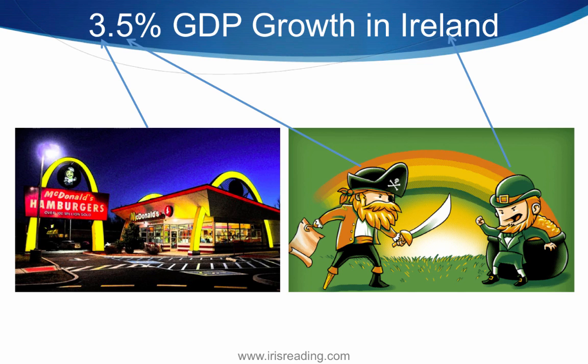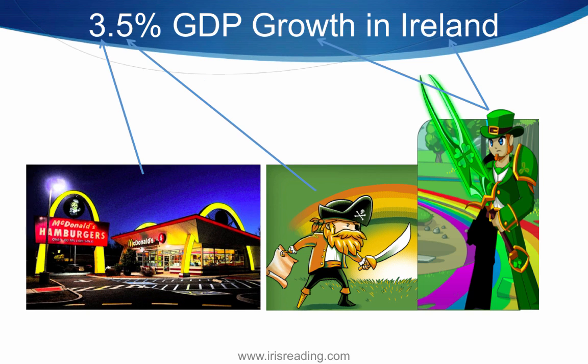There's one element missing — what if sometimes the number relates to growth, and sometimes it might be a decline in GDP? We need something in our imagery to represent growth. So I'd picture this leprechaun starting to grow really, really large into a giant leprechaun fighting this smaller pirate, just towering over him. That's how I'd remember the growth aspect of this number. If we had a decline, we might picture something shrinking or something really tiny.